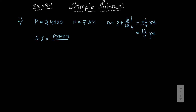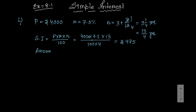First find simple interest using the formula P into R into n divided by 100. That equals 4000 into 7.5 into 13, divided by 4, divided by 100 — so 100 into 4. That equals rupees 975. Your amount is principal plus interest: 4000 plus 975 equals 4975 as your final answer.